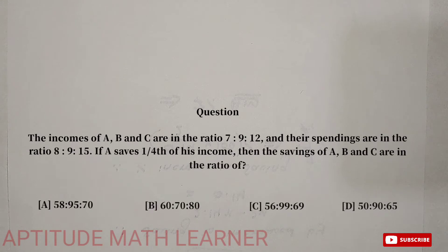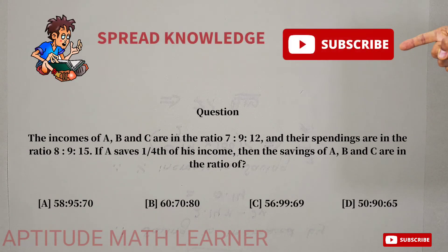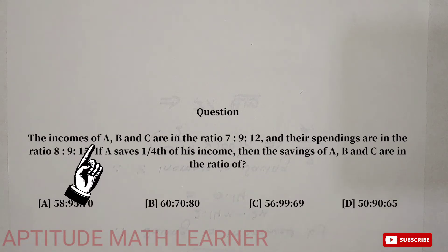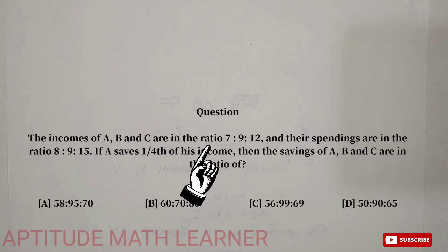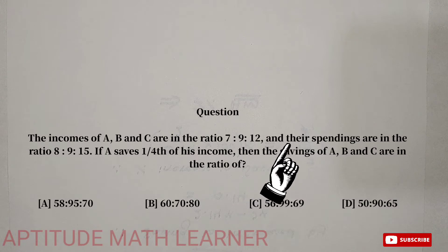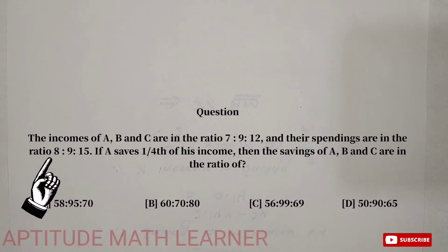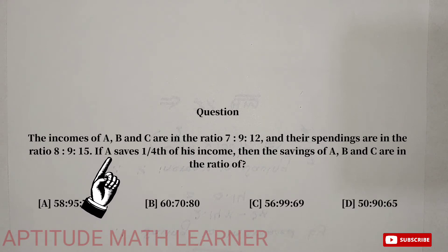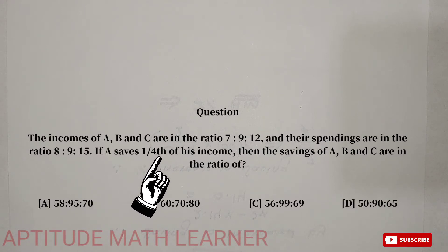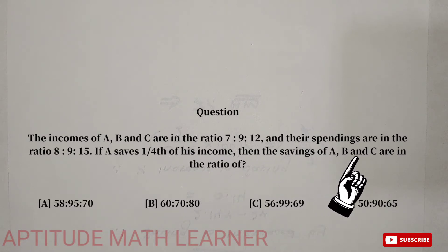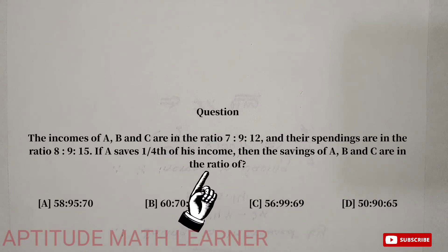Welcome to my YouTube channel Aptitude Math Learner. Today's question is: the incomes of A, B, and C are in the ratio 7:9:12, and their spendings are in the ratio 8:9:15. If A saves one-fourth of his income, then find the savings of A, B, and C in ratio.